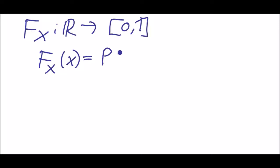For this we also get a so called distribution function F. F goes from R to the interval 0,1 and it describes for a certain x the probability of the omegas.